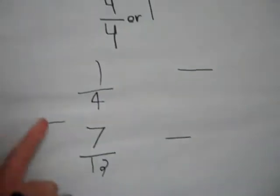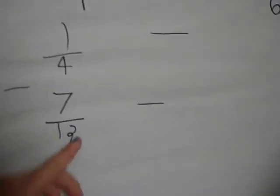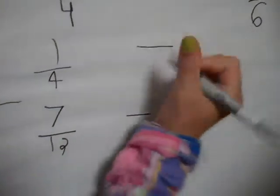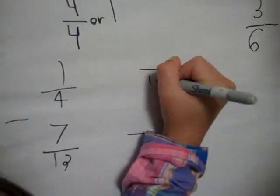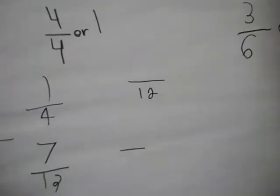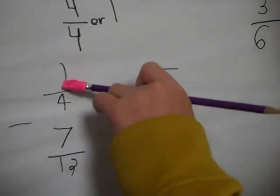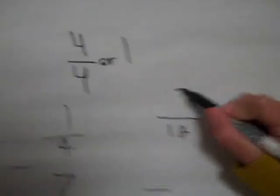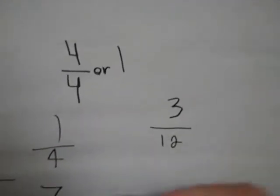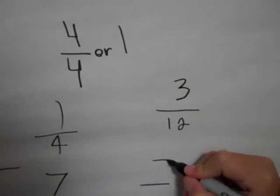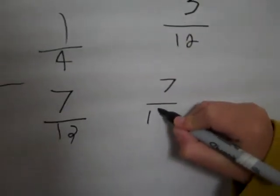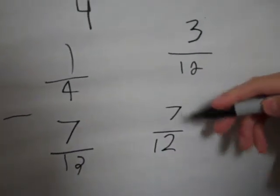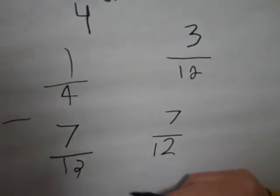So we have to make the denominators the same, so four times three equals twelve. So we put a twelve down here. Then one times three would be three. So that'd be three-twelfths. This would still be seven-twelfths. So seven-twelfths minus three-twelfths would be four-twelfths.